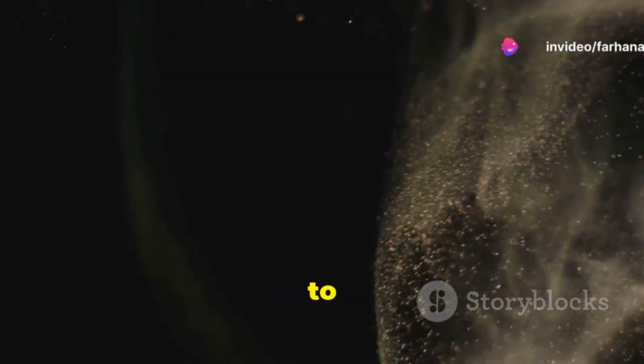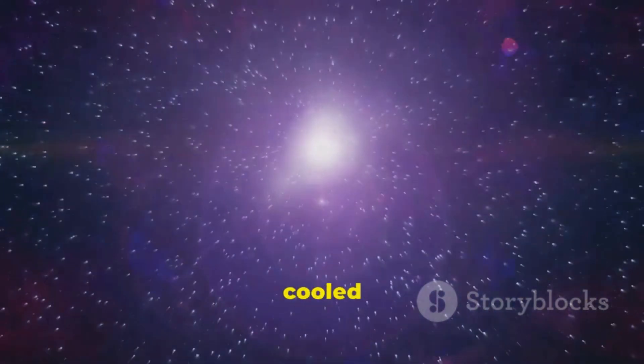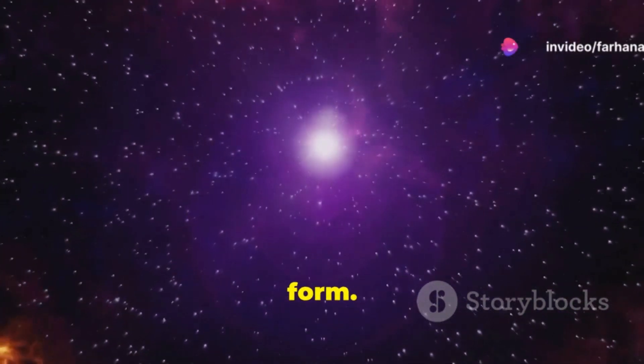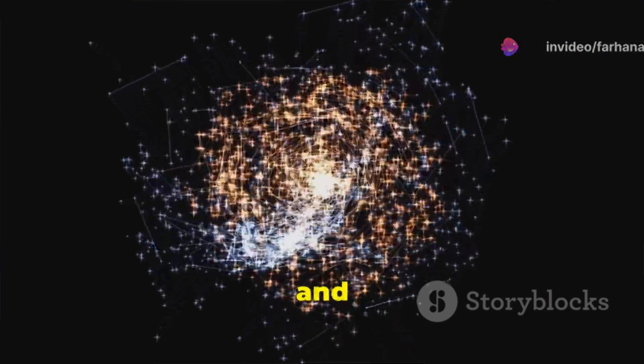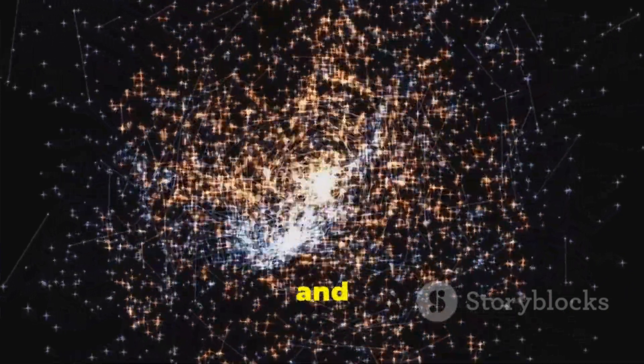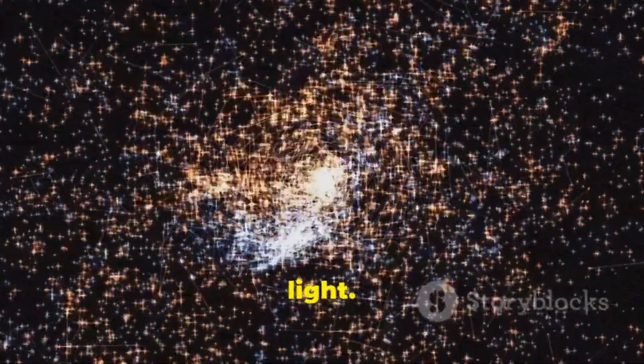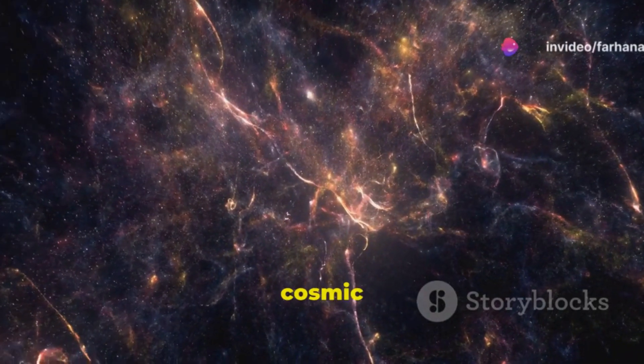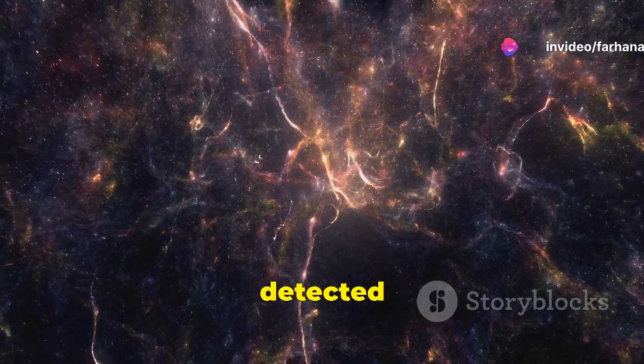This allowed particles to combine and form protons and neutrons. About 380,000 years after the Big Bang, the universe cooled enough for atoms to form. This era is called recombination. Electrons combined with protons and neutrons to form hydrogen and helium atoms. The universe became transparent to light. This light, known as the cosmic microwave background radiation, can still be detected today.